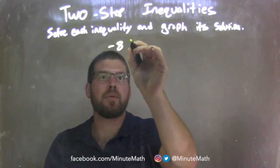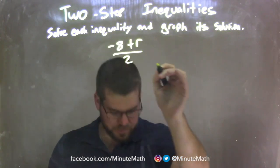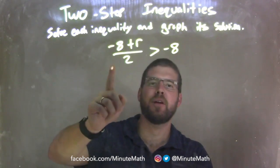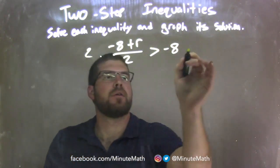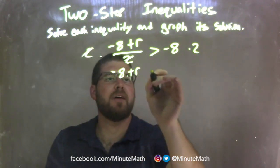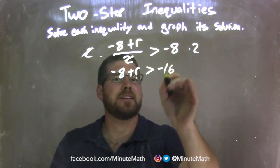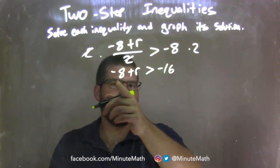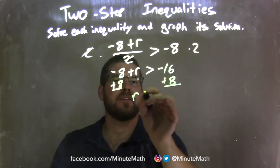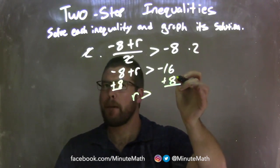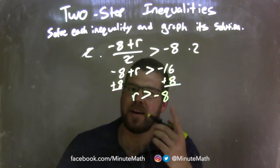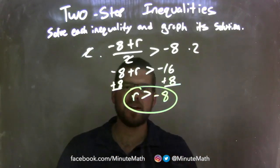Negative 8 plus r, over 2, is greater than negative 8. First step: multiply both sides by 2 — the 2s cancel — leaving me with negative 8 plus r on the left is greater than negative 8 times 2, which is negative 16. I then see that negative 8 and add 8 to both sides, leaving r by itself is greater than negative 16 plus positive 8, which is negative 8. So r is isolated and greater than negative 8. That's our final answer.